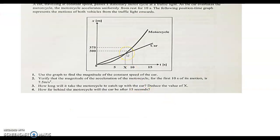A car traveling at constant speed passes a stationary motorcycle at a traffic light. As the car overtakes the motorcycle, the motorcycle accelerates uniformly from rest for 10 seconds. The following position-time graph represents the motions of both vehicles from the traffic light onwards.